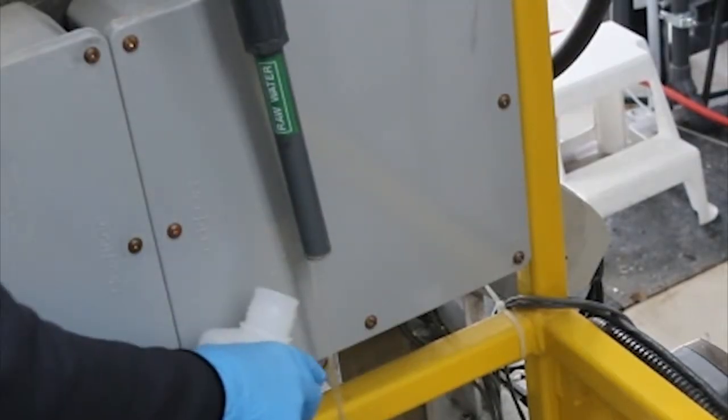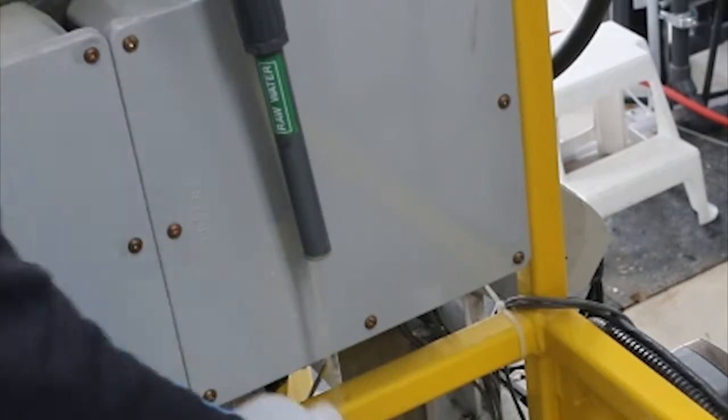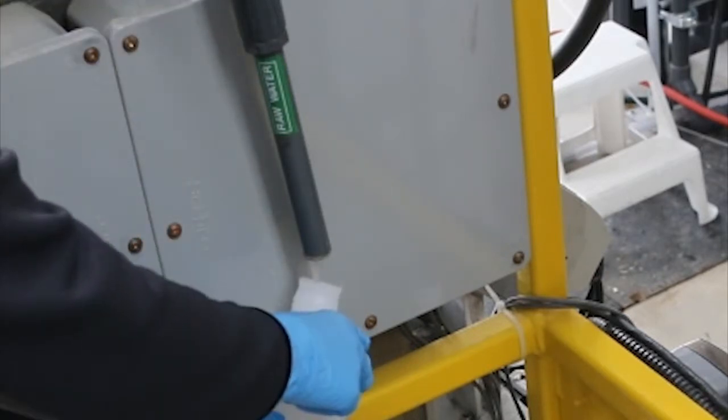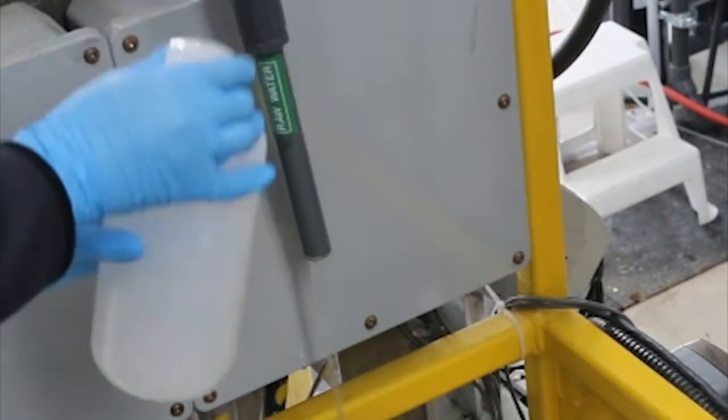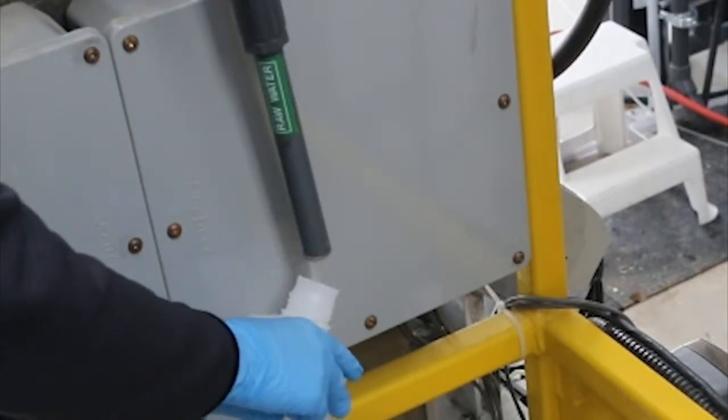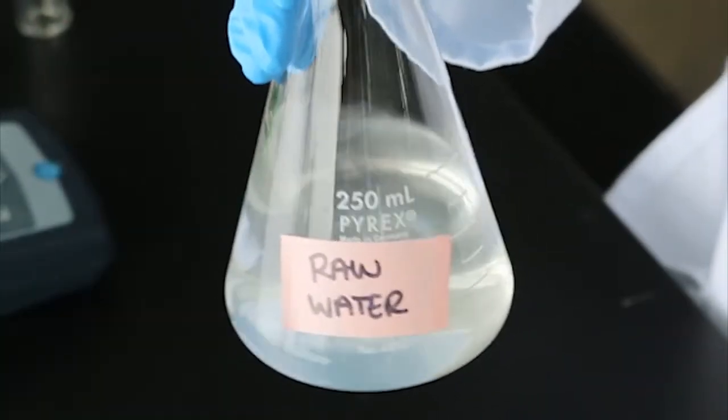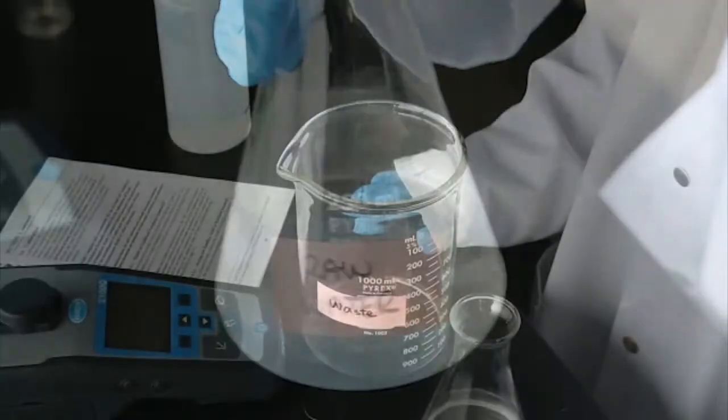Collect a representative sample of your water in a clean container. Analyze the sample as soon as possible to prevent temperature changes and particle settling. Gently agitate the sample before testing to ensure you obtain a representative measurement.